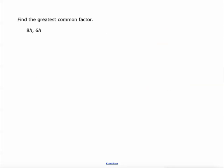Got a few examples for you here. We're going to find the greatest common factor of these two monomials. The first monomial is 8h, the second monomial is 6h. What's their greatest common factor?